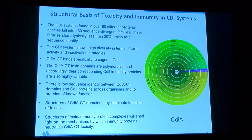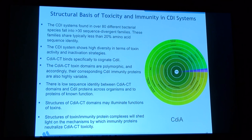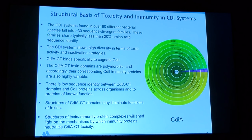The CDI system has been found in over 80 different bacterial species, falling into about 30 different families. These families typically share only 20% sequence identity and show very high diversity in toxin activity and activation genes. The C-terminal toxin domains, called CDI-CT, are very polymorphic, and the corresponding CDI immunity proteins are also highly variable, with low sequence identity across organisms.